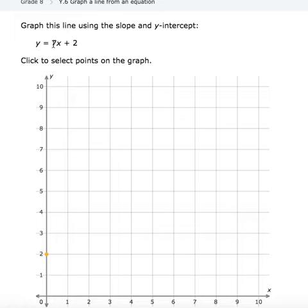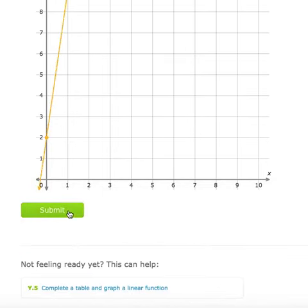So if I've got a slope of 7, that means I need to rise 7 and run 1. So from here I'm going to rise 7, 1, 2, 3, 4, 5, 6, 7, then run 1, and then I've got my line graph just like that.